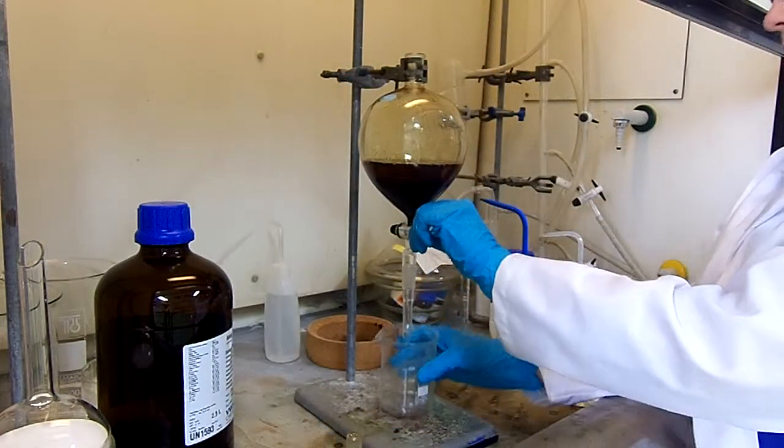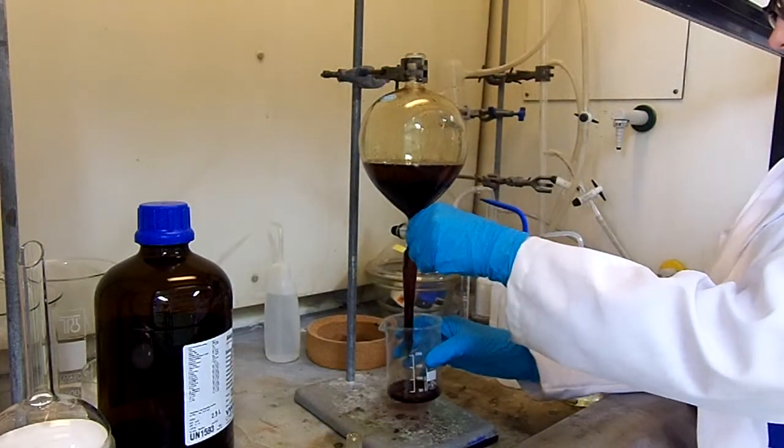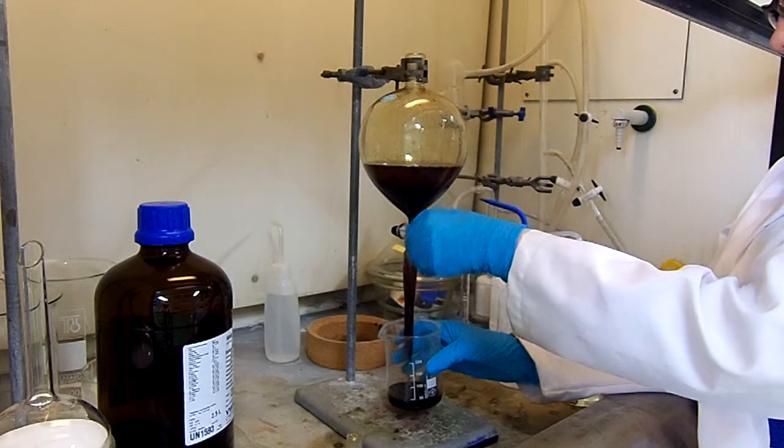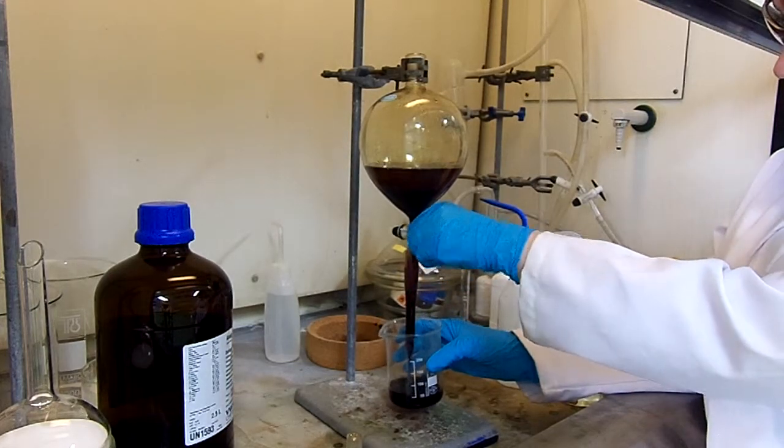As the solvent you are using is chlorinated, this layer will sink below the aqueous layer and will be the bottom, darkly coloured layer in the separating funnel.